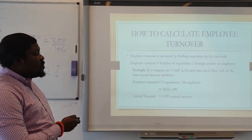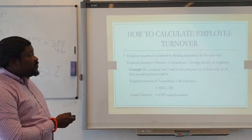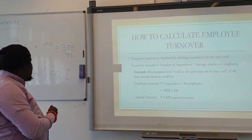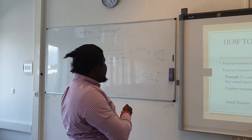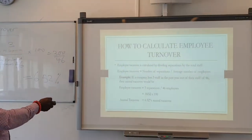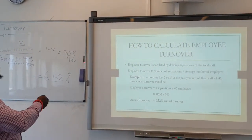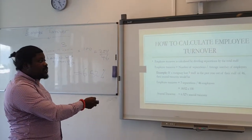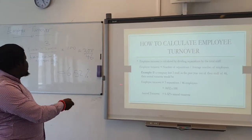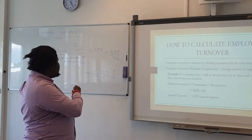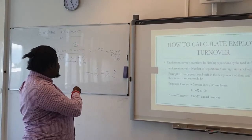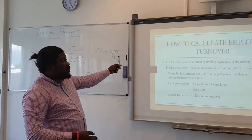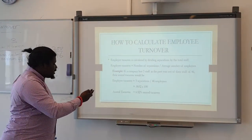To summarise: Employee Turnover = Number of Separations ÷ Average Number of Employees × 100. In this example, the number of separations is 3 because 3 staff left the organization, and the total number of employees is 46. So it's 3 × 100 = 300, divided by 46. That is how you calculate employee turnover.